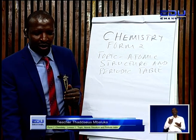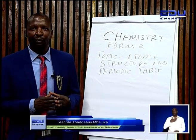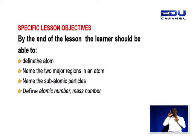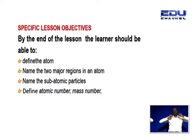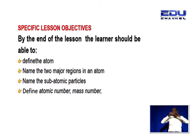Let us look at our lesson objectives for today. By the end of the lesson, the learner should be able to define an atom, name the two major regions in an atom, name the subatomic particles within an atom, and be able to define what is atomic number and what is mass number.